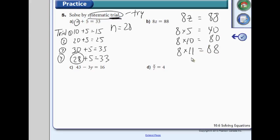So I'm going to try 8 times 11. And yes, there we go. So 8 times 11 is 88. So z equals 11.